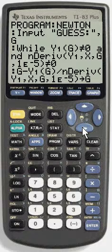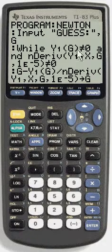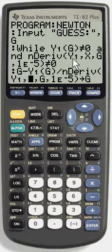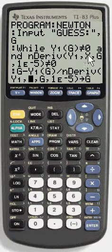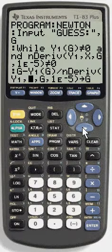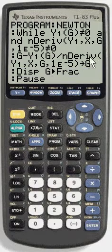And it will do the following as long as the function doesn't evaluate to 0 y1 of g does not equal 0 and the derivative of y1 with respect to x at the value g with the tolerance of 1 times 10 to the negative 5th just to make it a little more accurate than the default which is 0.001 does not equal 0 because then we'd be dividing by 0.